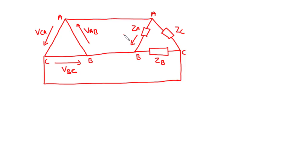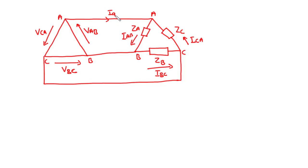Let Iab, Ibc, and Ica be the phase currents flowing in the respective phases, and let Ia, Ib, and Ic be the respective line currents.